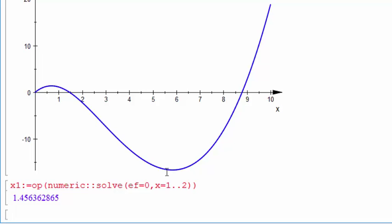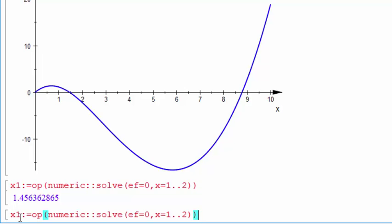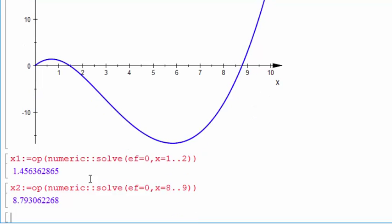And to get the other solution, I just do the same sort of thing. Let me just copy and paste it. And this will be solution number 2. And we'll look for a solution between 8 and 9 this time. 8.793062268. Ta-da! So there we have. We've got it. We found our two, we found two non-trivial roots to this system. And that's it for this tutorial.